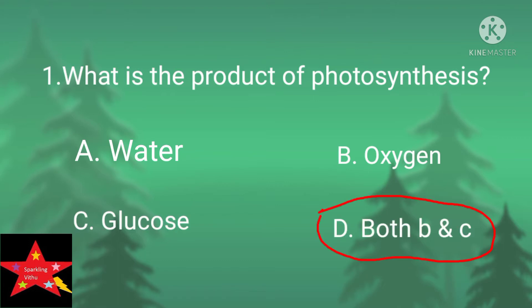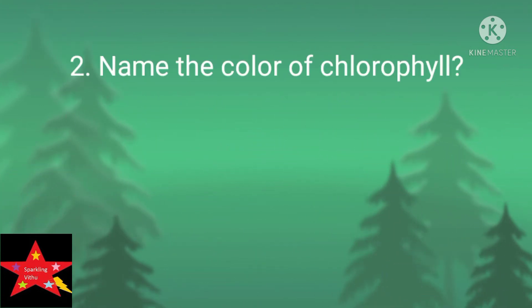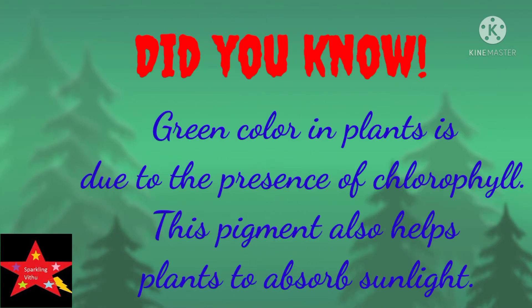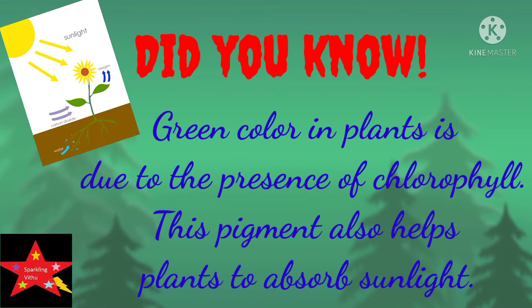Answer: Option D. Name the color of chlorophyll. Answer: Green. Did you know? Green color in plants is due to the presence of chlorophyll. This pigment also helps plants to absorb sunlight.